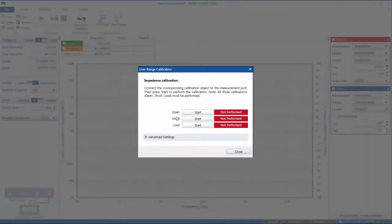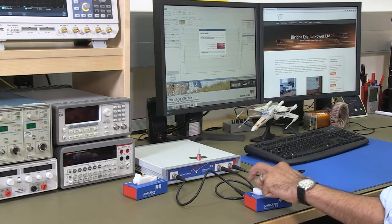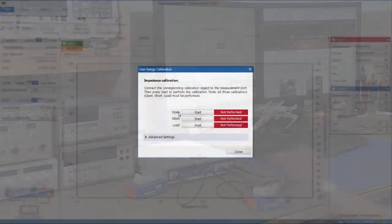So you get three options: open, short and load. Open is when the impedance adapter is open-circuited so there's nothing in it and just press that.